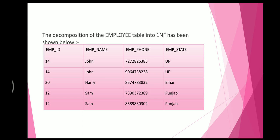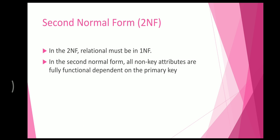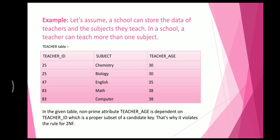Now we are going to see the Second Normal Form. In 2NF, the relation must be in 1NF and all non-key attributes must be fully functionally dependent on the primary key. Now we will see 2NF through an example.